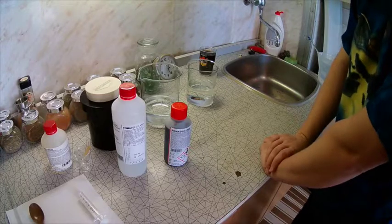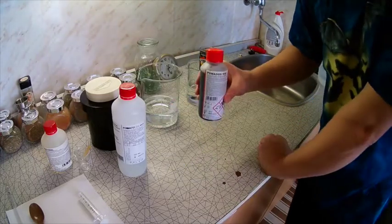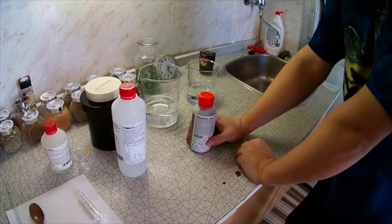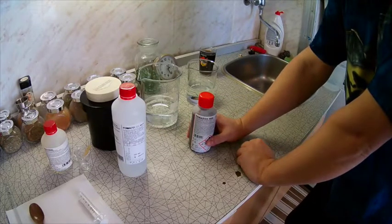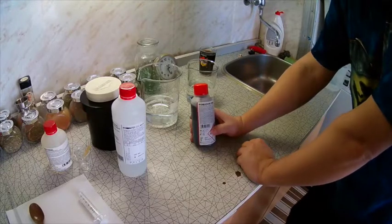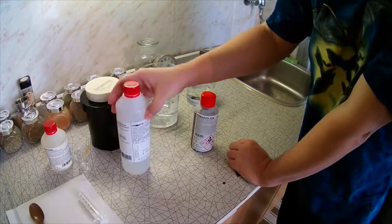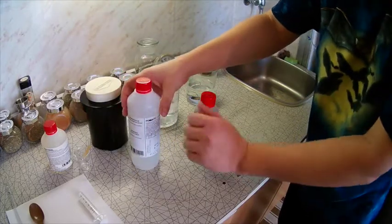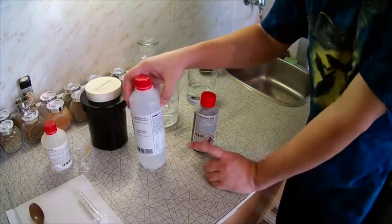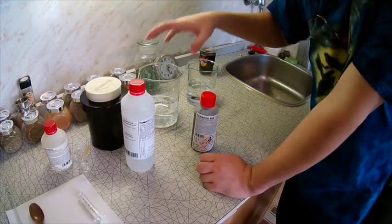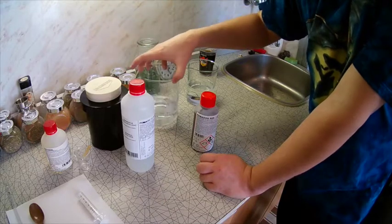And now to develop the film, we have developer. This one is called Rodinal. It actually comes from the 19th century. The recipe didn't change for, I think, 130 years or something like this. And then a fixer. This one is already prepared in the beaker, so we will be just preparing the developer now. This is the fixer.